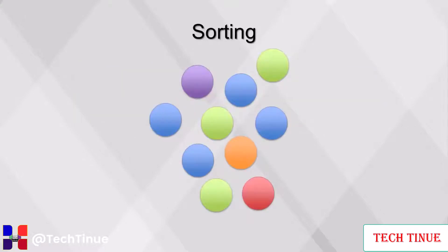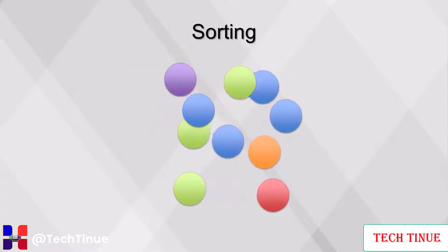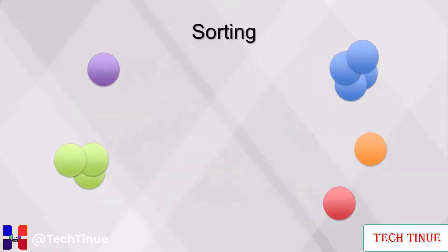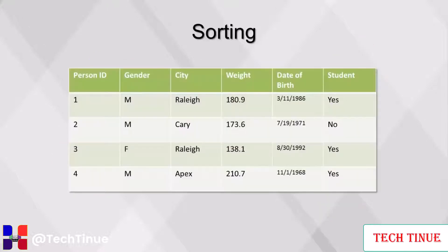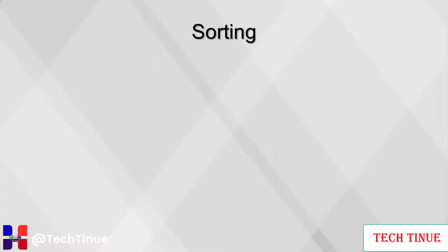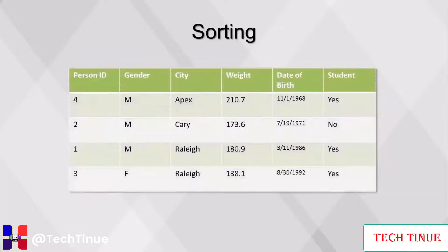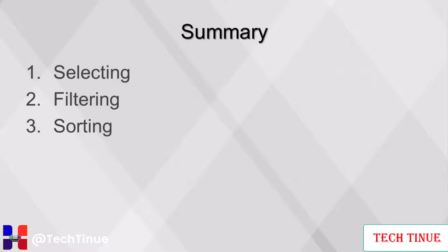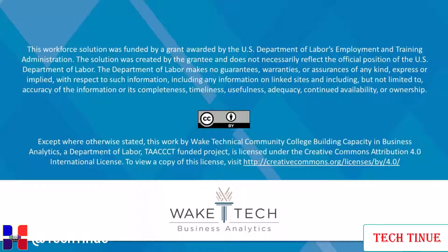The next step is sorting. When we sort, we rearrange a table by ordering the rows according to the values of one or more fields, in either ascending or descending order. Here's our original dataset sorted by date of birth in ascending order. Here we've sorted by city in ascending order and then by weight in descending order. This concludes our video on selecting, filtering, and sorting.